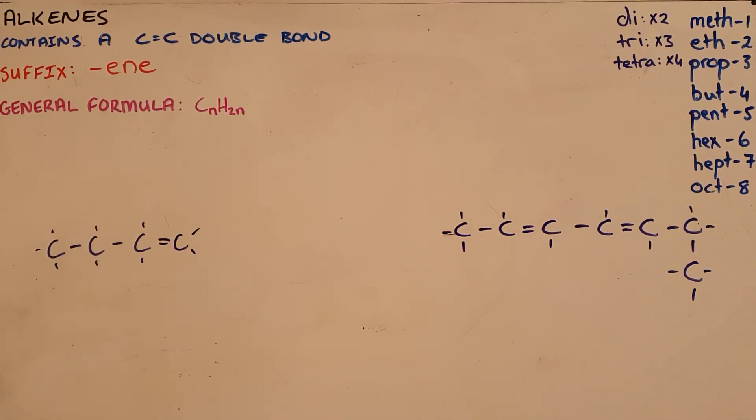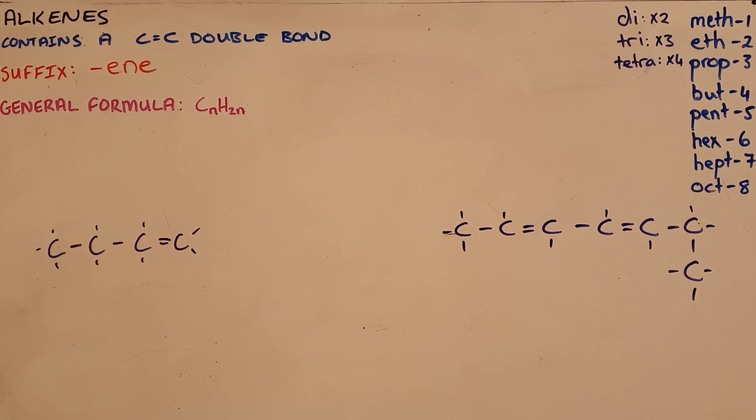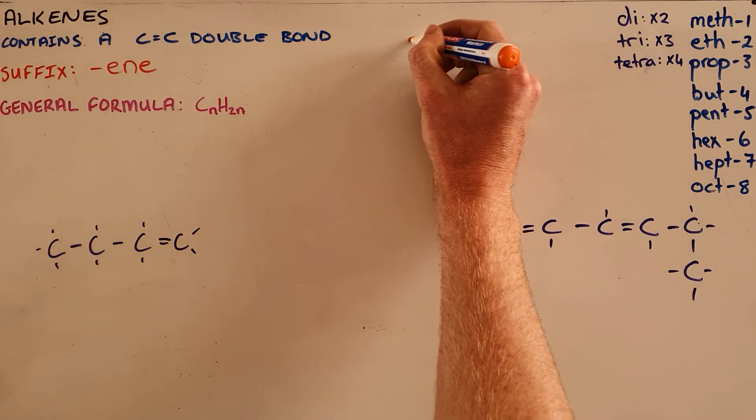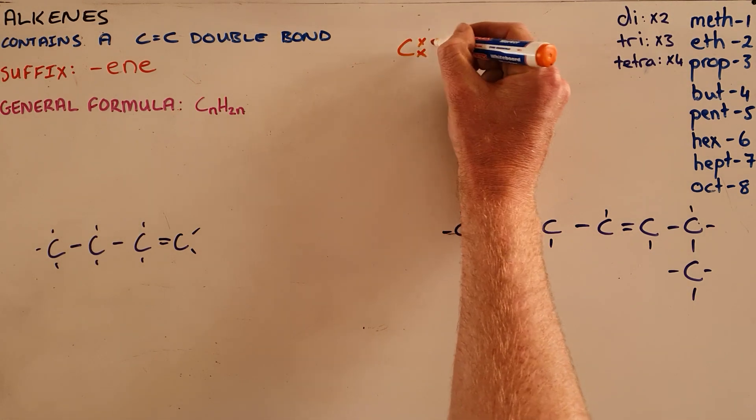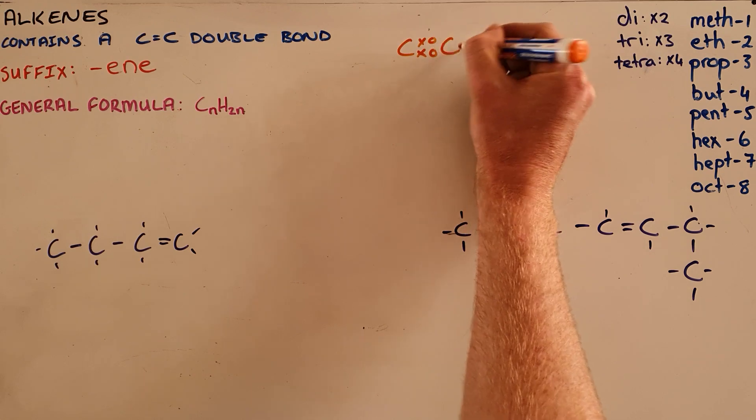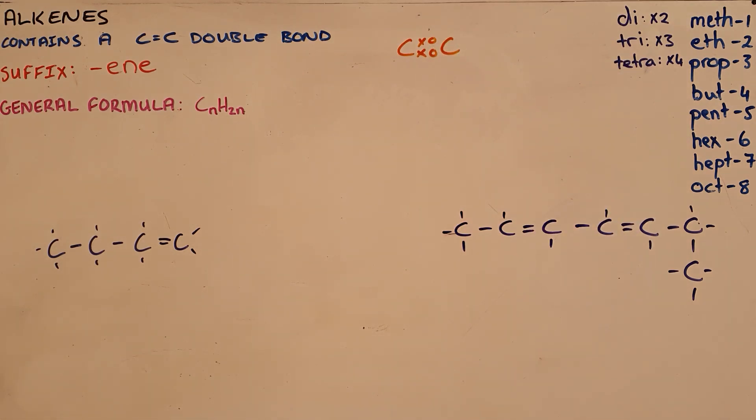Alkenes are compounds that contain at least one carbon-carbon double bond, where a carbon-carbon double bond is one in which each carbon present in the bond shares two electrons.